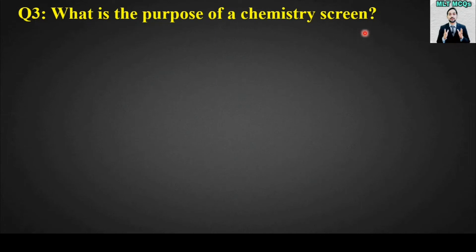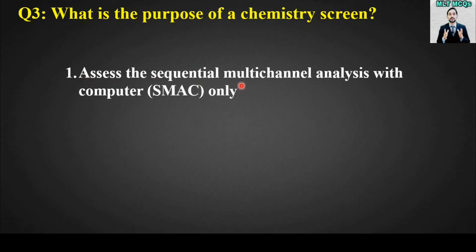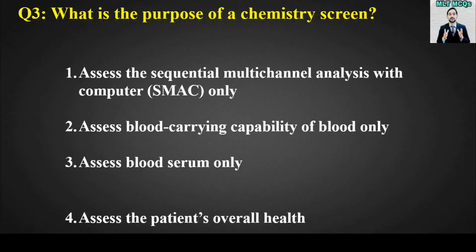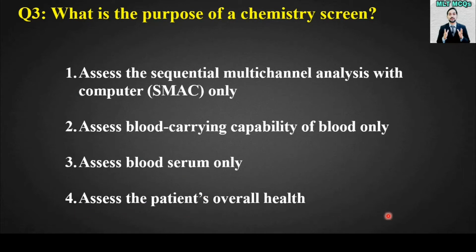MCQ number three: What is the purpose of a chemistry screen? Options: assess the sequential multi-channel analysis with computer (SMAC) only; assess blood carrying capability of blood only; assess blood serum only; assess the patient's overall health. The right answer is option number four — a chemistry screen is used to assess the patient's overall health.